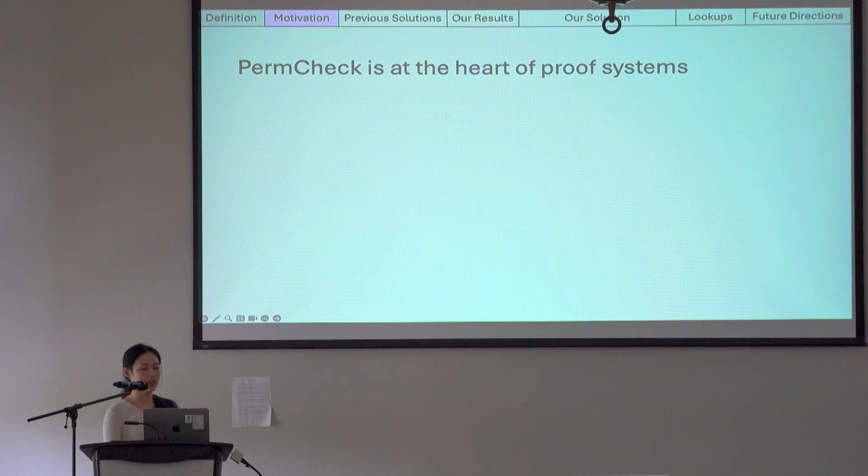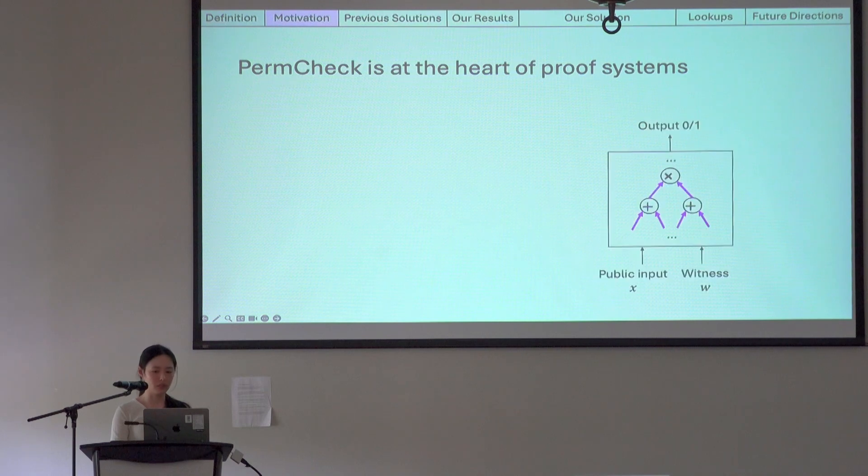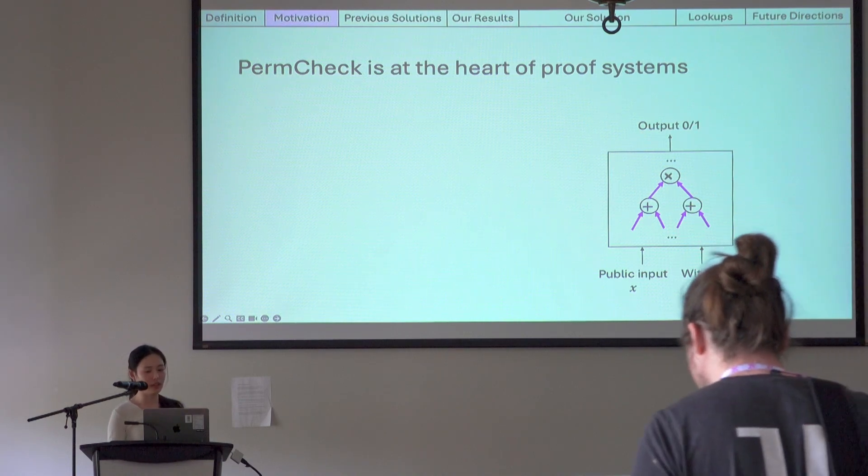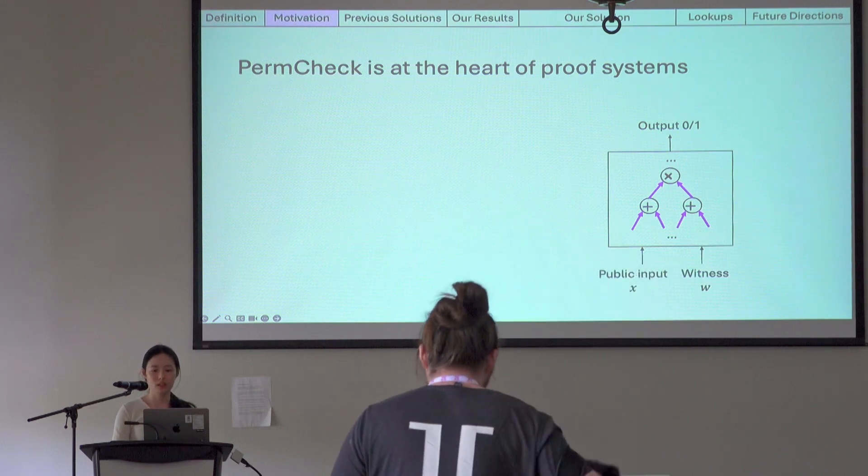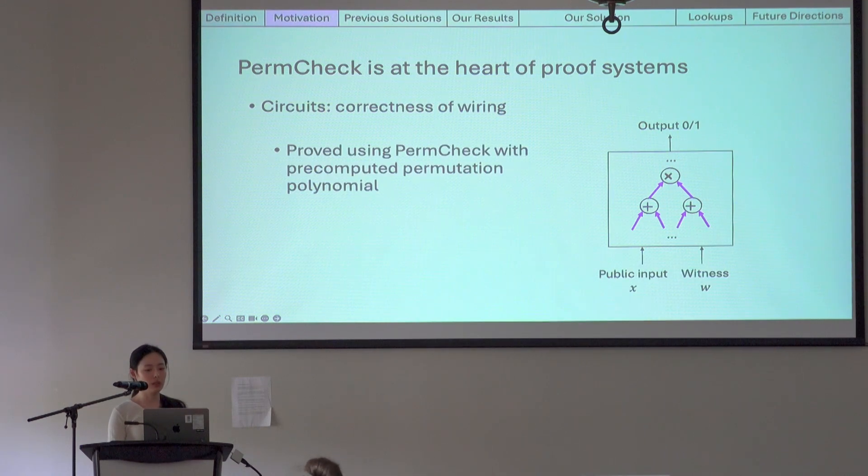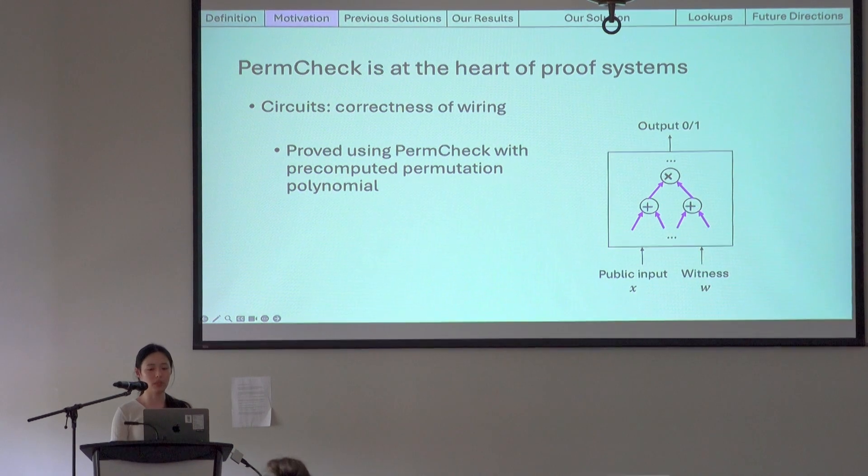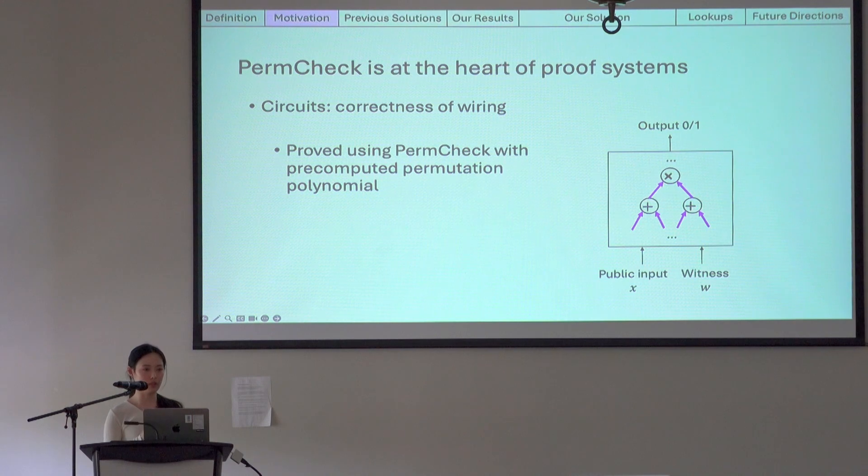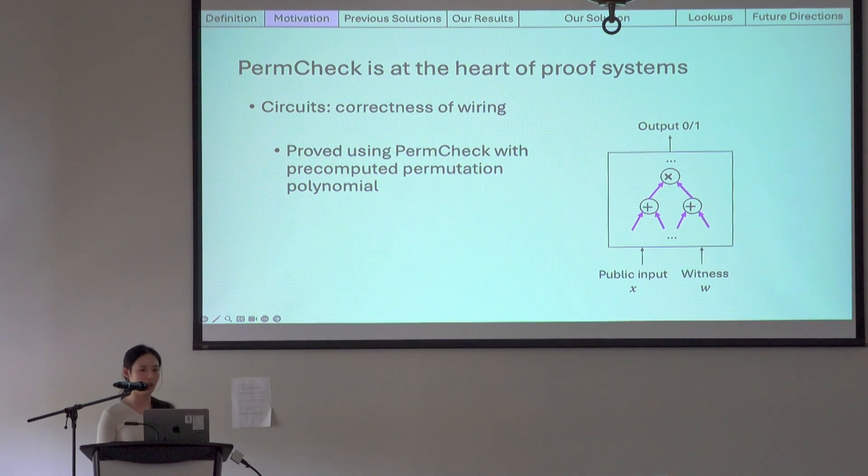Why do we care about permutation check? Well, perm check is at the heart of proof systems. In circuits particularly, we need to prove the correctness of wiring. In other words, the prover needs to show that the inputs to each gate are indeed the outputs of the correct gates from the previous layer. This is proved using permutation check with a pre-computed permutation polynomial. So the wiring or the permutation polynomial is committed to as part of the circuit description, and then we perform a perm check to show that the inputs and outputs of the gates are consistent with the committed wiring.